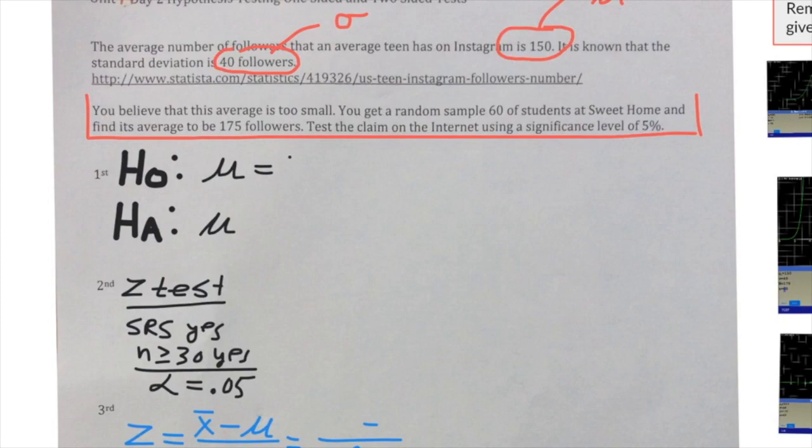This is where a hypothesis test takes shape. We're told that the average was 150 followers and we believe that that average is too small. We believe that the actual average should be higher than 150. When you're doing a hypothesis test, these numbers should always match and should always be discussing the average from the population, never the average from the sample.